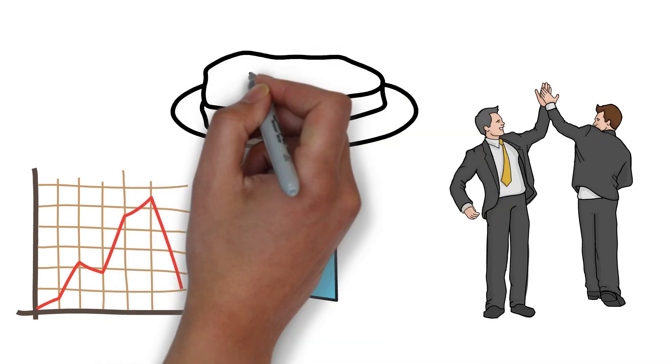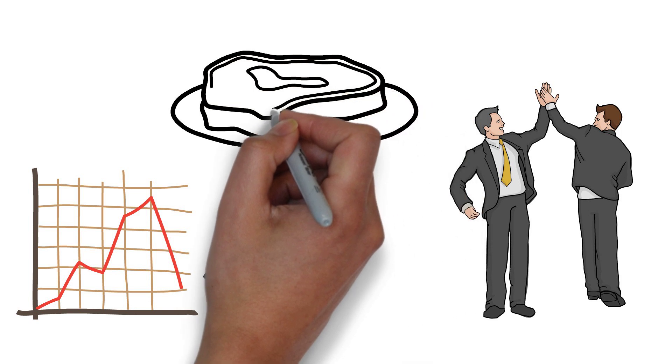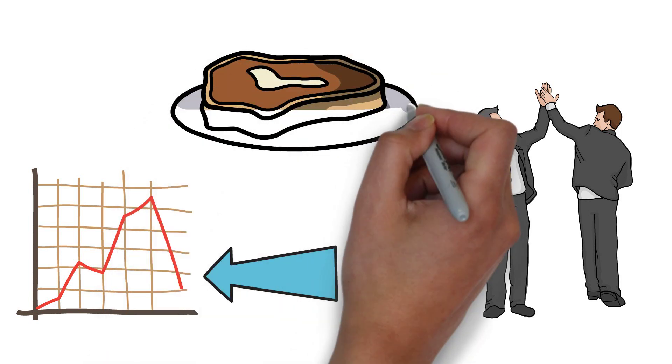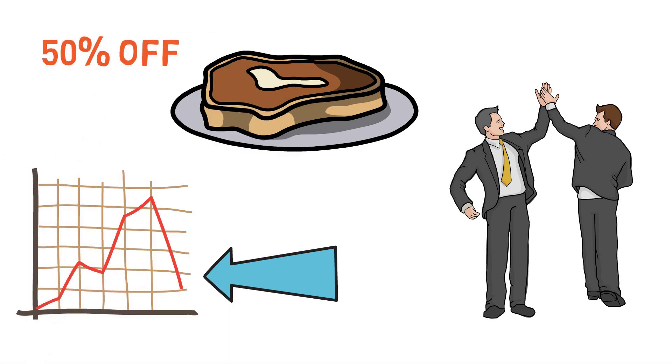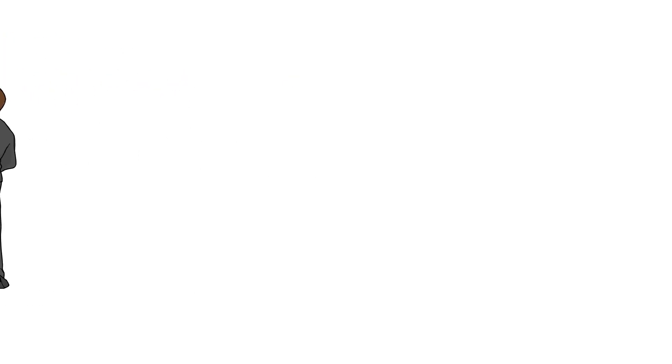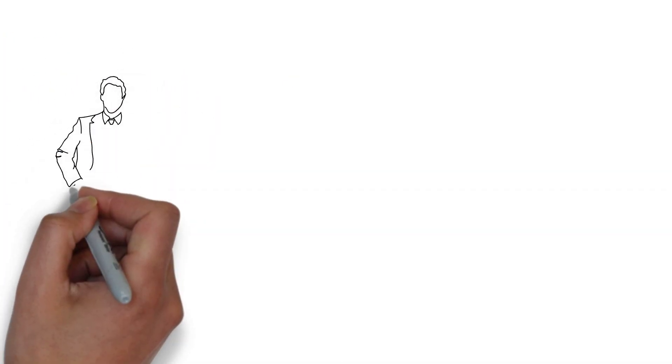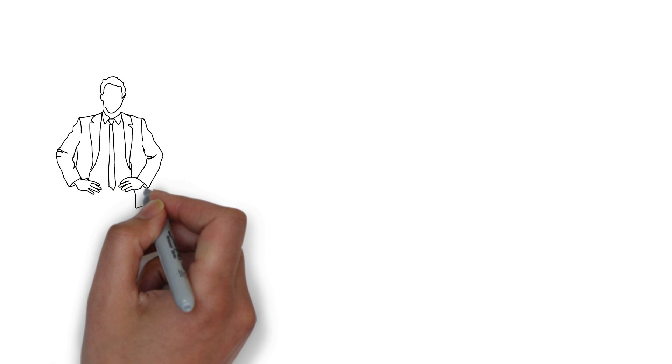You could compare a stock market drop to a sale in your favorite store. If your favorite cut of meat goes on sale, you might see this as an opportunity to purchase more at a discount. You would be gaining the opportunity to buy the same item for less money. This is how successful investors view bad times in the markets.